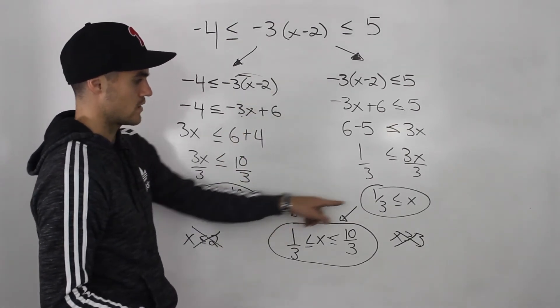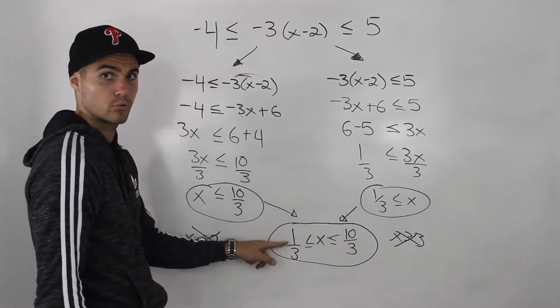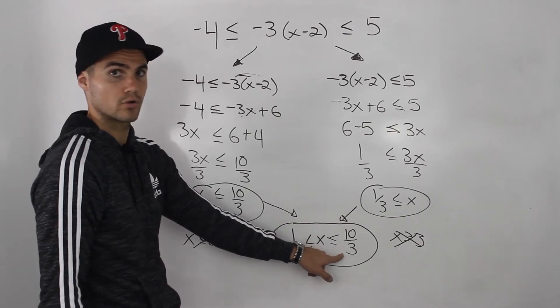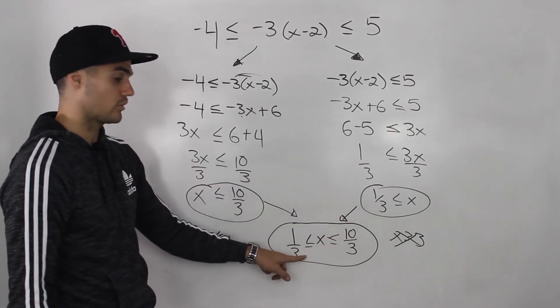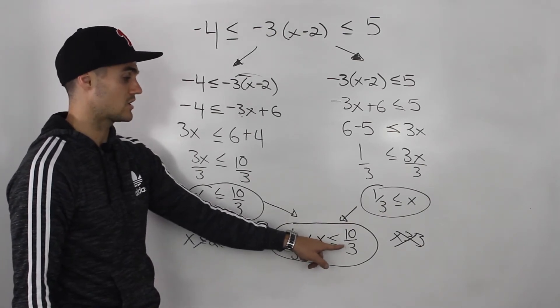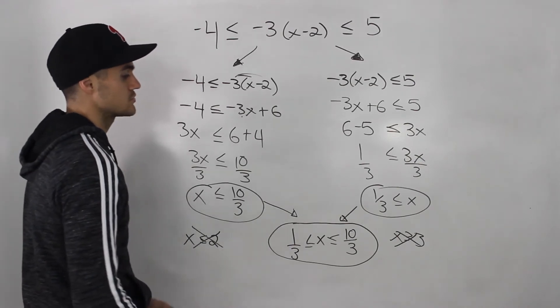However, with these numbers, these make sense. 1 over 3 is like 0.33 and then 10 over 3 is 3.33. So x being greater than or equal to 0.33 and less than or equal to 3.33, that makes sense. So this here is a valid solution.